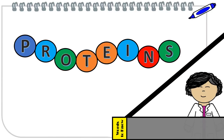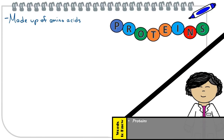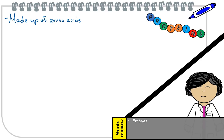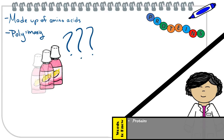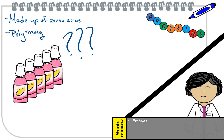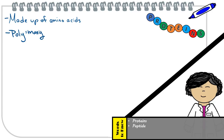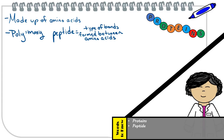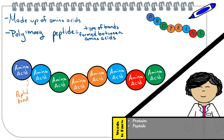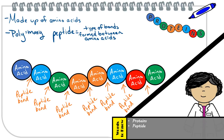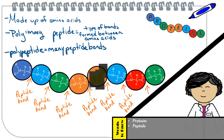Let's first begin with proteins, which are made up of long chains of amino acid monomers. These chains of amino acids are often called polypeptide chains. Peptide refers to the type of bonds formed between each amino acid, and because it's a lot of amino acids joined together making a long chain, that's why we call it a polypeptide chain.